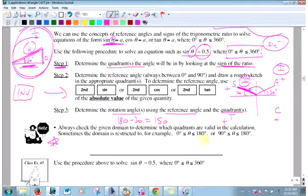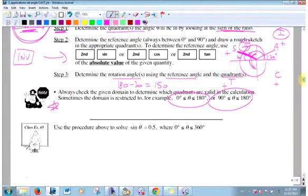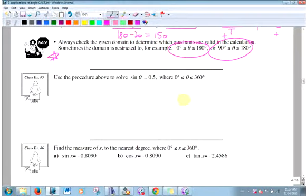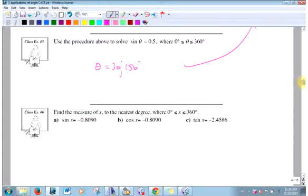Just one other thing. We might restrict it. This was anywhere from 0 to 360. We might say I just want the first two quadrants. We might say I just want the second and the third quadrants from 90 to 180 degrees. So just keep that in mind, but let's just look at the first one. I just did it. So theta is 30 or 150 degrees. Both of those give you a ratio of 0.5.